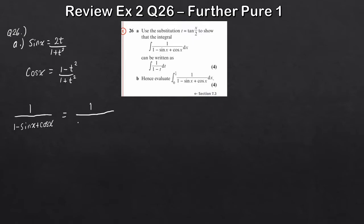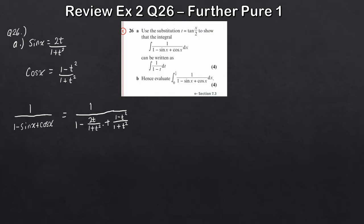The good thing that jumps out here is that both trig functions we've substituted have a common denominator of (1 + t²). So what I'm going to do is multiply both top and bottom by (1 + t²) to clear that denominator. When I do that, the numerator is just 1 × (1 + t²), giving (1 + t²), and in the denominator the 1 multiplied by (1 + t²) also gives (1 + t²).